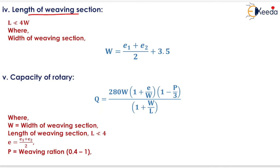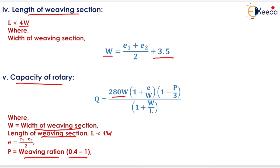Width of weaving section W = (E1 + E2)/2 + 3.5. The capacity of the rotary equals 280 × W × (1 + E/W) × (1 − P/3) / (1 + W/L), where W is the width of weaving section, L is the length of weaving section (not less than 4 times the width of weaving section), E = (E1 + E2)/2, and P is the weaving ratio, generally between 0.4 and 1.